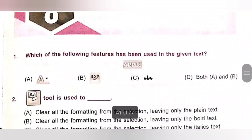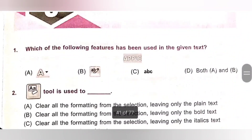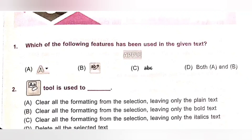First question: which of the following features has been used in the given text? A. Text Effect. B. Text Highlight Color Option. C. Strike Through. D. Both A and B. Please pause the video and see the given text. Only text effect and text highlight color option has been applied to the given text. So option D, Both A and B, is the correct answer.